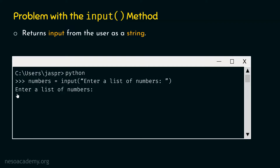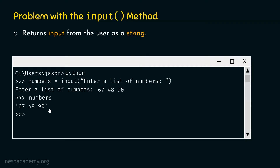We receive the prompt 'enter a list of numbers'. Let's type 67, 48 and 90 — meaning we want the numbers variable to point to this list of items. After hitting enter and typing 'numbers' to check, we get back the string '67 48 90'. This is the problem — we are receiving it as a string and not as individual items of a list.